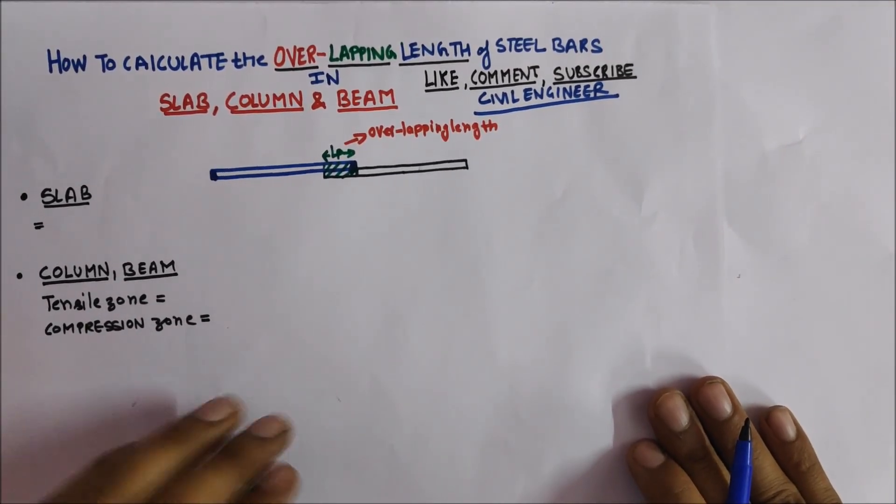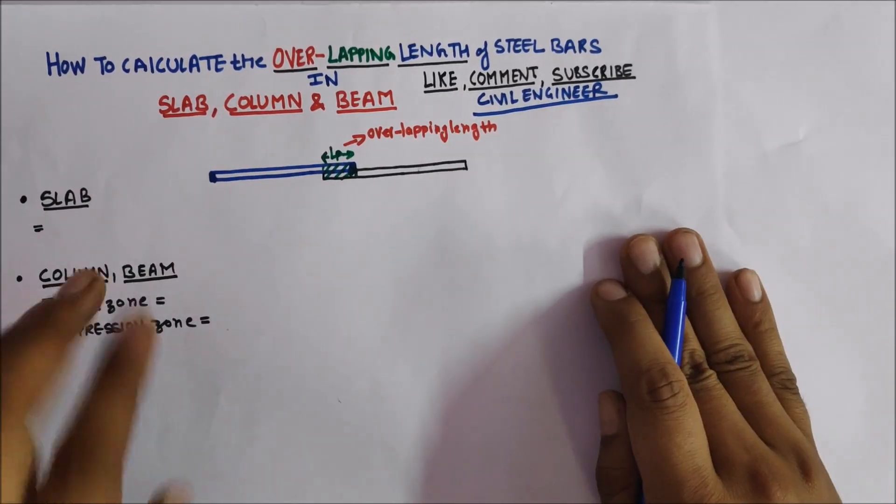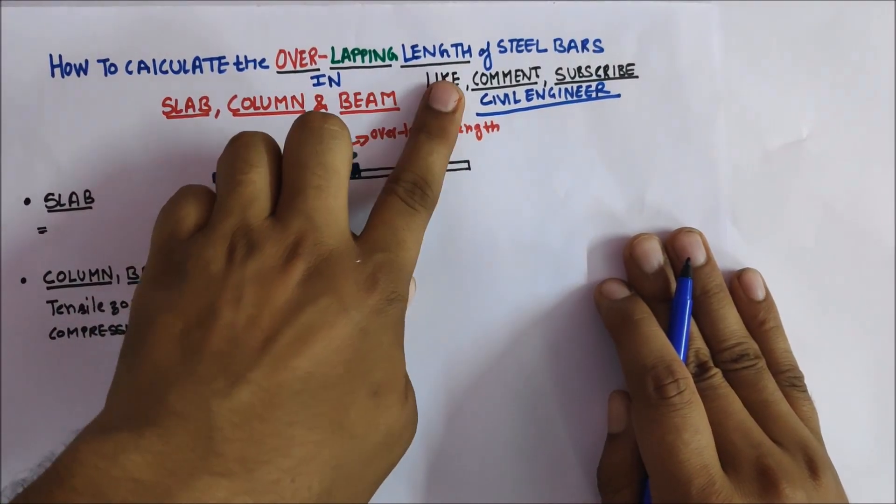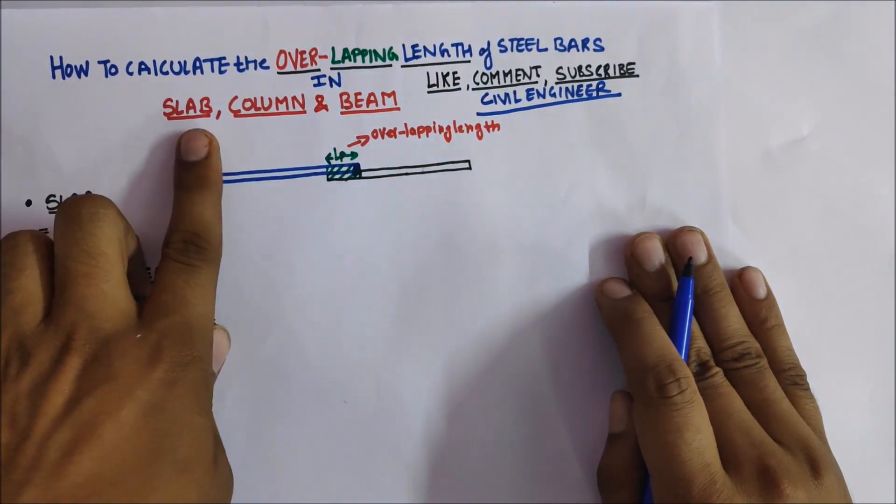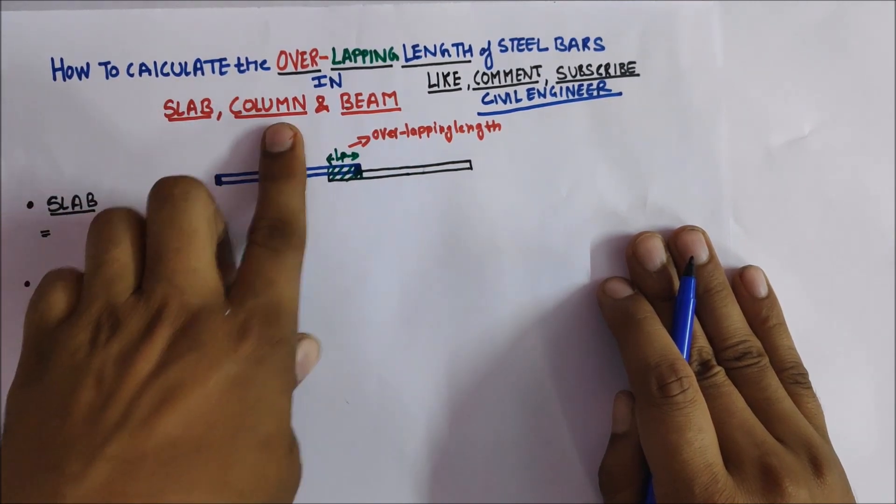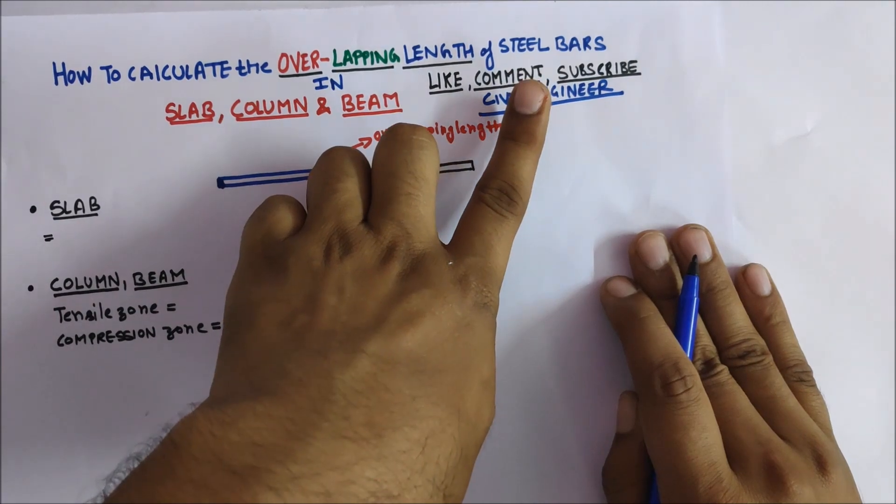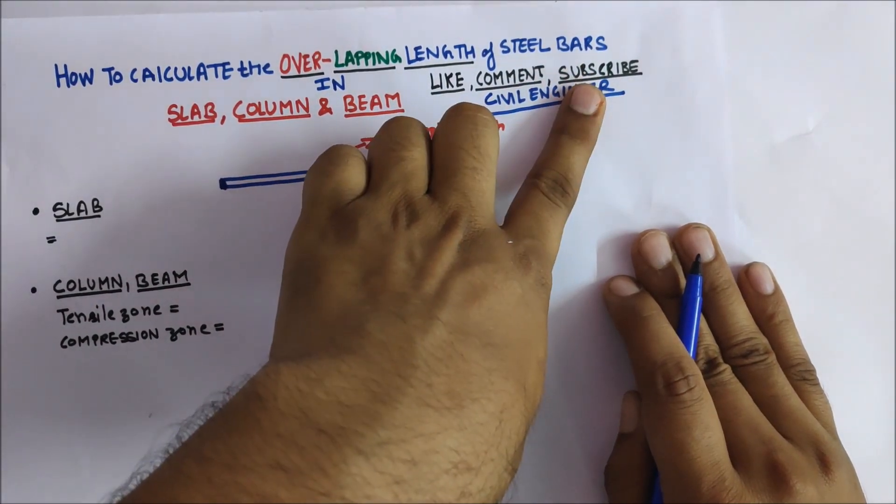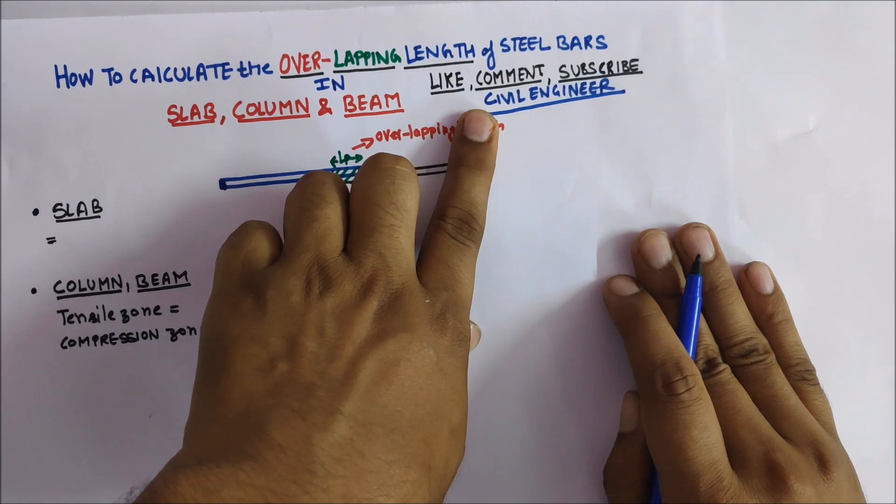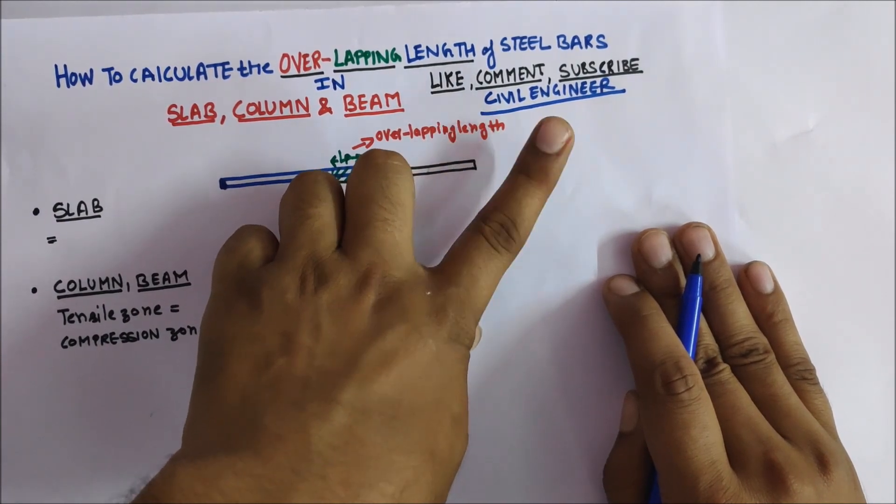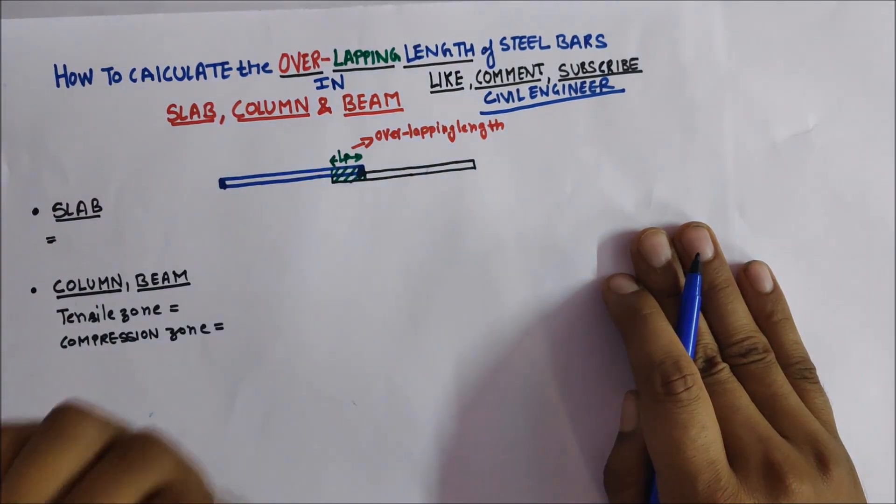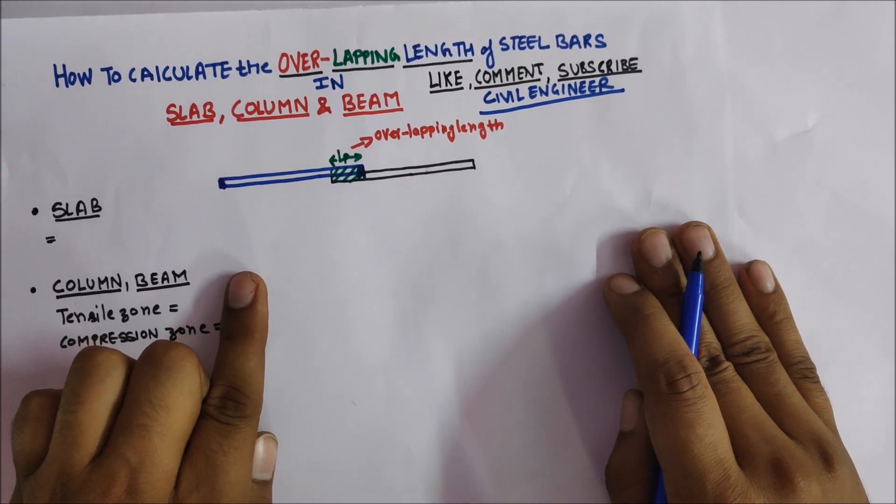Hello friends, today we'll discuss how to calculate the overlapping length of steel bars for slab, column, and beam. Please like, comment, and subscribe to the channel. Click the bell icon to receive notifications when I upload new videos. This is for civil engineers.